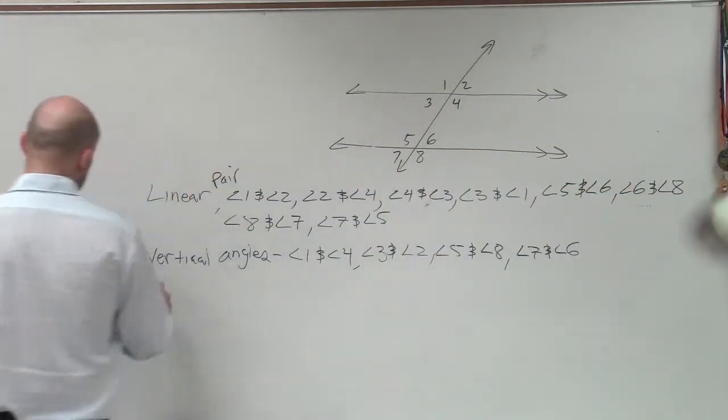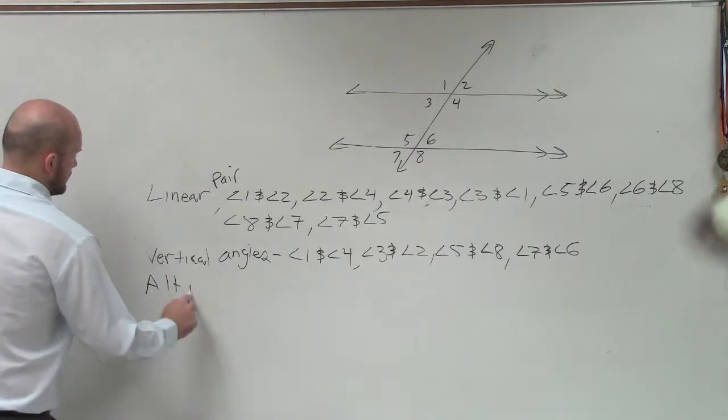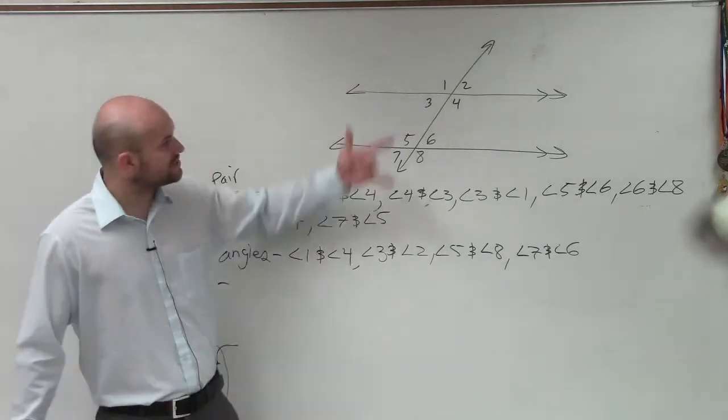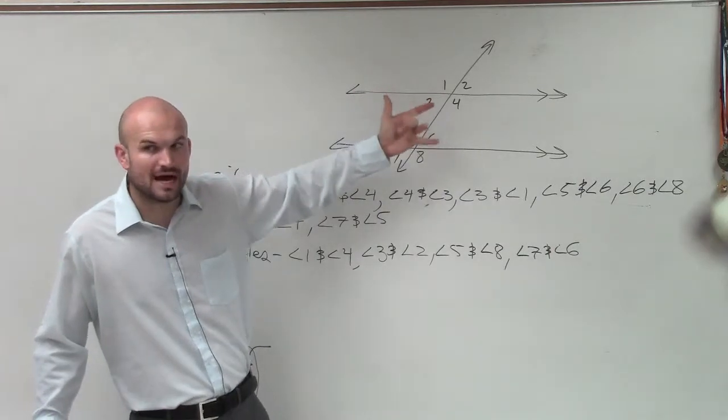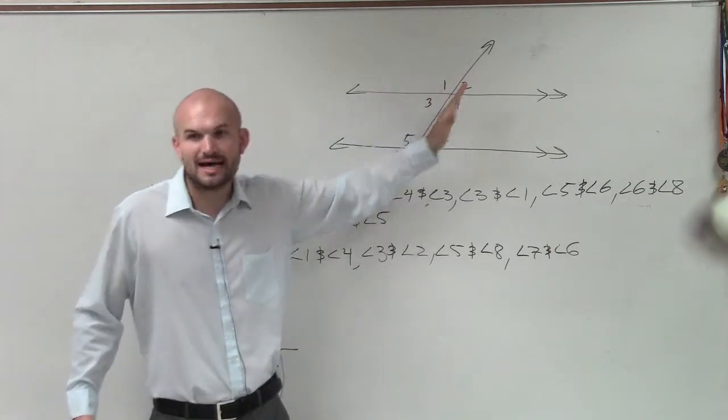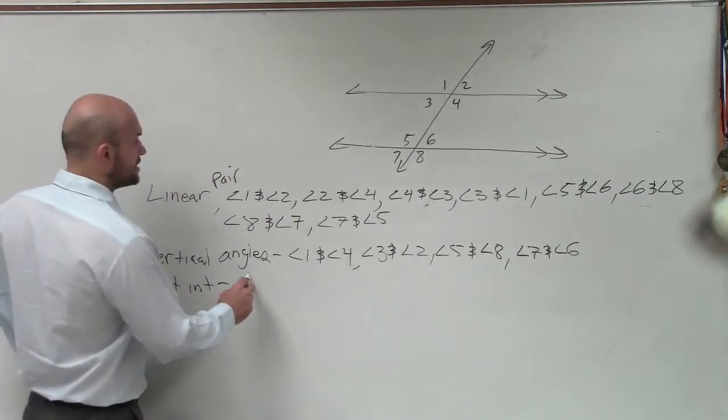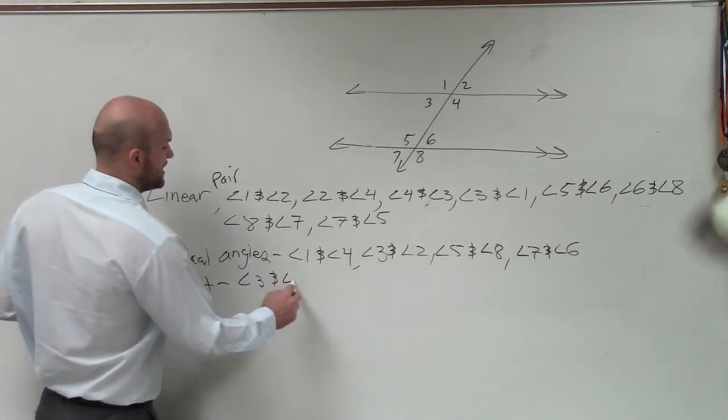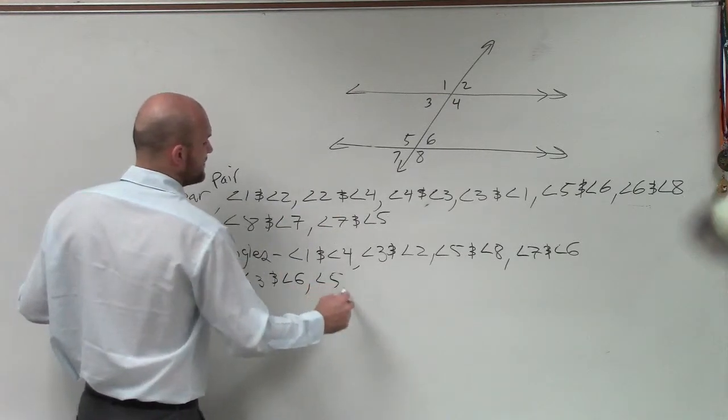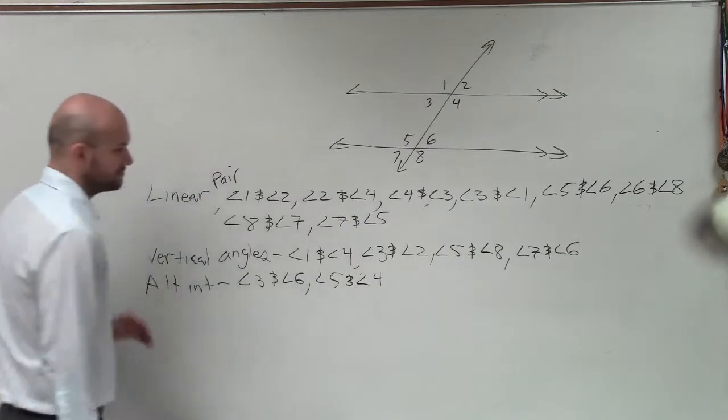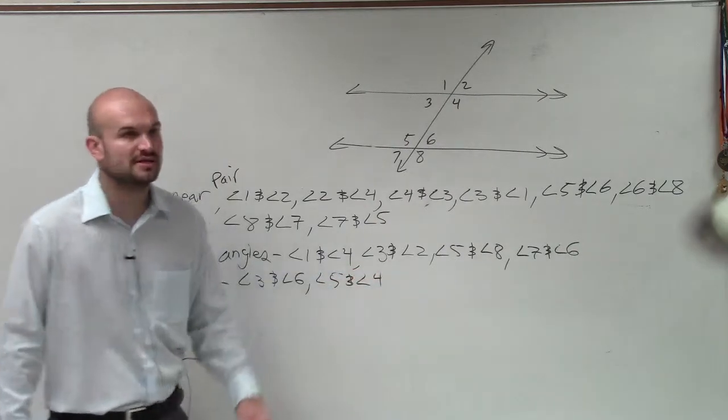The next one is alternate interior. Remember, guys, when we're doing alternate interior, those are angles that are interior of your parallel lines, but they alternate the line that intersects them, which we call the transversal. So our examples of alternate interior are angle three and angle six, and then angle five and angle four. And there's only two examples of alternate interior.